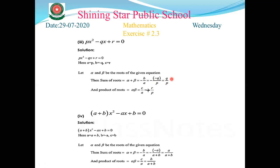For the product of roots, alpha times beta = c/a. Putting in values: c is r and a is p, so the product of roots is r/p. That is the required answer for part number three.